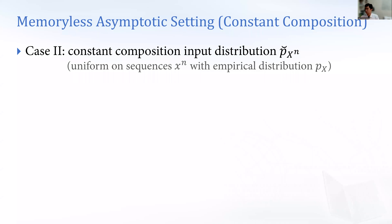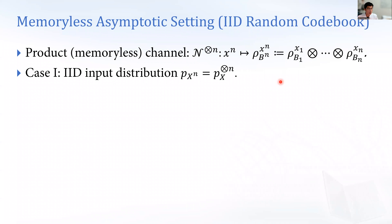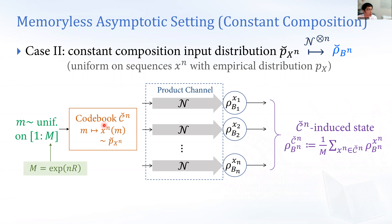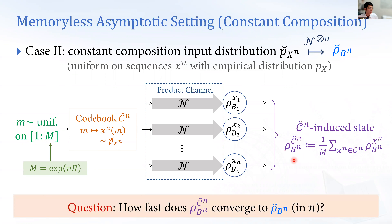Continuing with constant composition codes: the output is not a tensor product, but we can also consider the true output density. We call this the constant composition random codebook, which gives the constant composition random codebook-induced output density. Again, for each codebook size rate, we ask how fast this codebook-induced state converges to the true output state — which is not a tensor product.